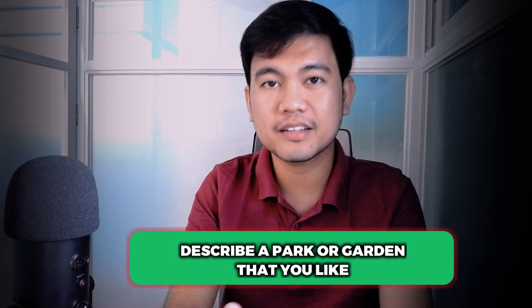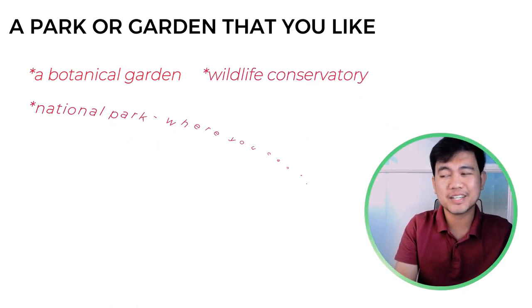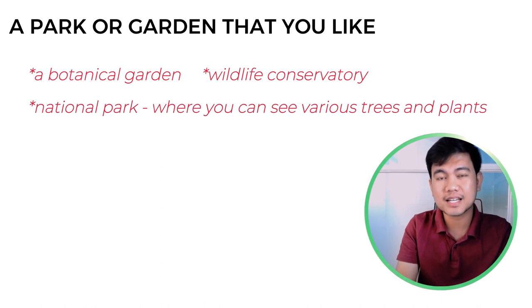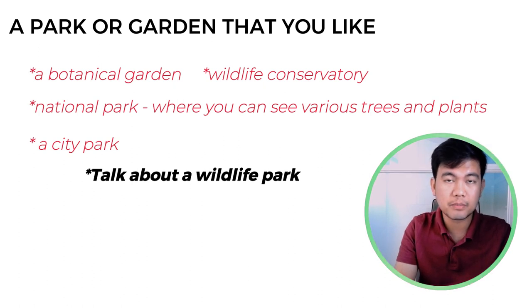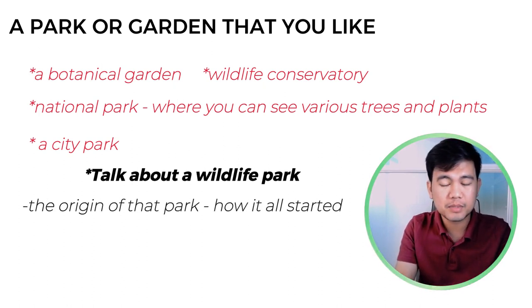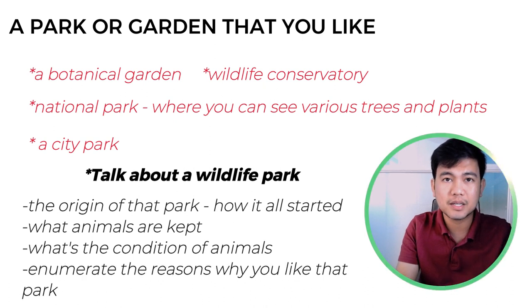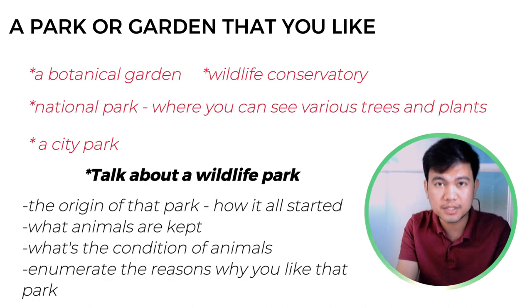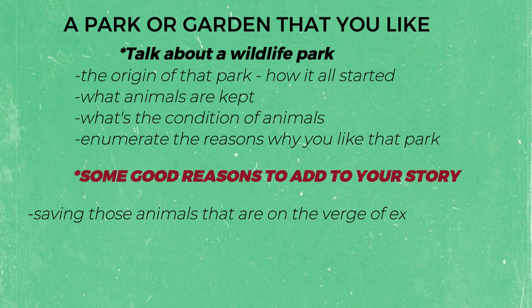Let's move on to a park or garden that you like. Some ideas include a botanical garden, a wildlife conservatory, a national park where you can see various trees and plants protected by the government, and even a city park where you can enjoy walking and children can play. If you're someone who really loves animals, talk about the wildlife park. Develop a story by talking about the origin of the park, how it all started, what animals are kept there, the condition of the animals, and the reasons why you like the park — for example, the people managing it are doing their best to save animals on the verge of extinction.